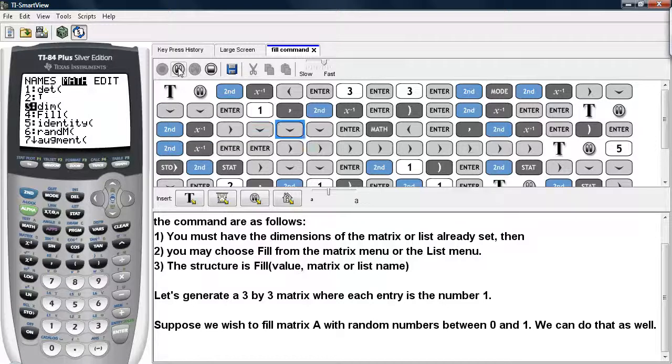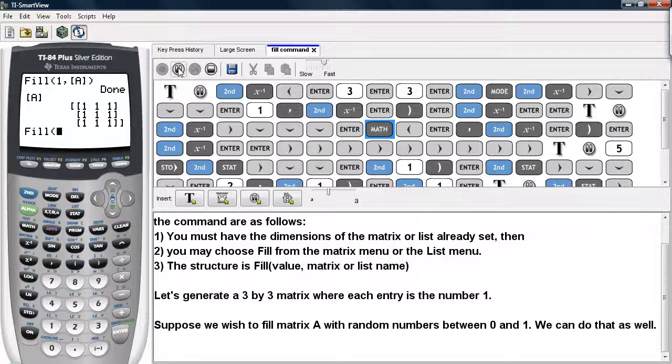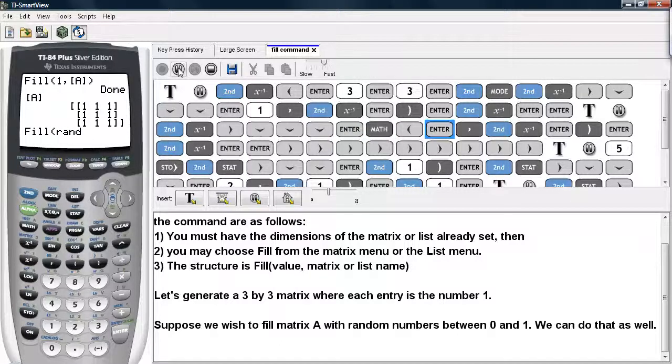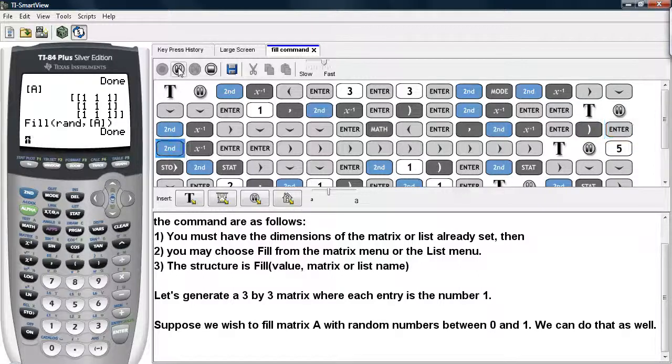And then we can go under the math button, select PRB, and select rand. Then we can tell it which matrix we wish to fill with this random number, and we choose matrix A. So let's see it.